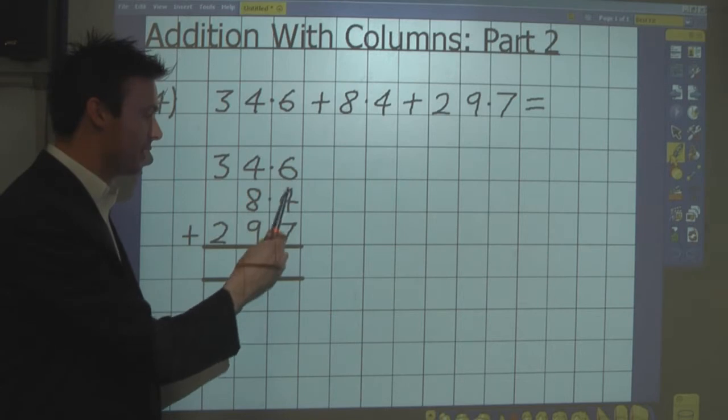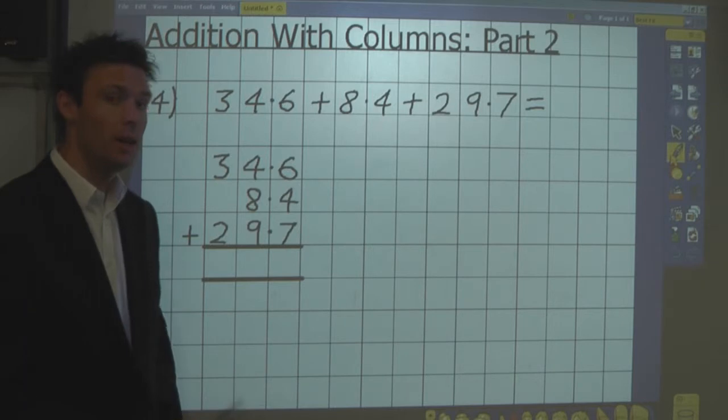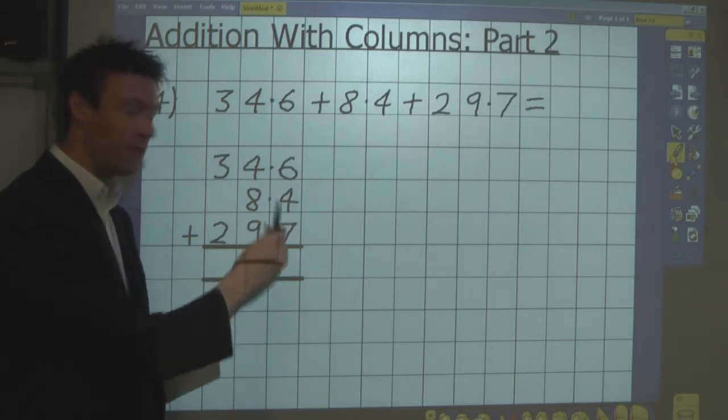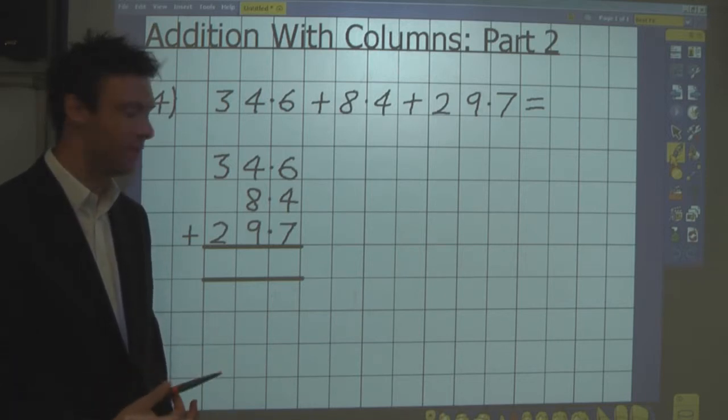I do not say 6 and 4 and 7, because these are not units. They are tenths. They are the tenths column. So I say 6 tenths plus 4 tenths plus 7 tenths equals 1.7. One whole one and 7 tenths.